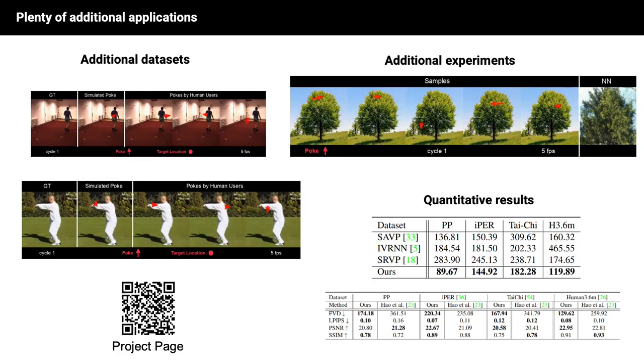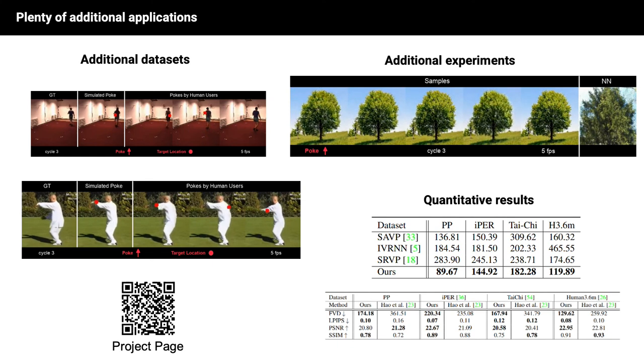Our paper contains plenty of other visualizations of further human motion datasets and also an extensive quantitative analysis, showing the strong performance of our model. Moreover, we show additional experiments including its generalization to images obtained from websearch. All this can be found in the paper and on our project page.